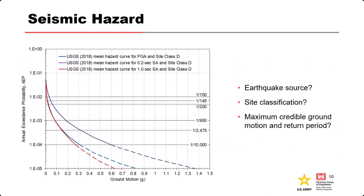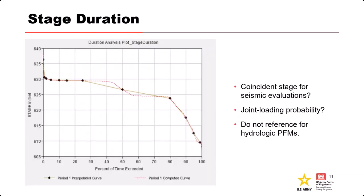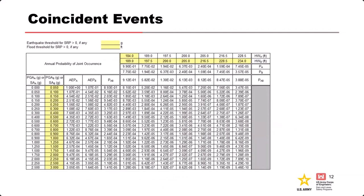For the seismic hazard curve, we need to answer questions about the source of the earthquake, the site classification, the maximum credible ground motion, and the return period. Along with the seismic hazard, we also need to identify the coincident stage thresholds and pooling probabilities. A helpful tool for estimating coincident loading of an earthquake and elevated pools is the RMC joint loading probability toolbox, available on the RMC website.